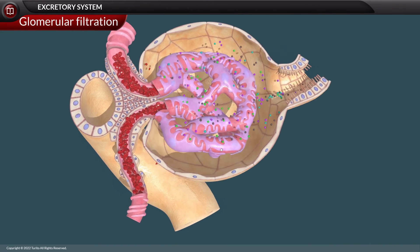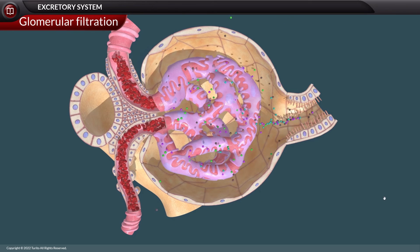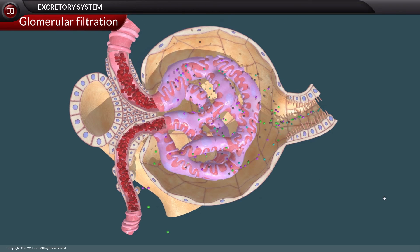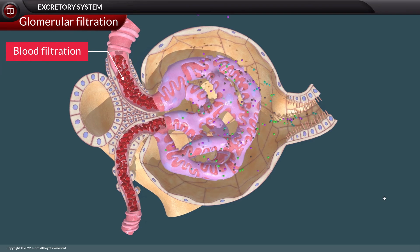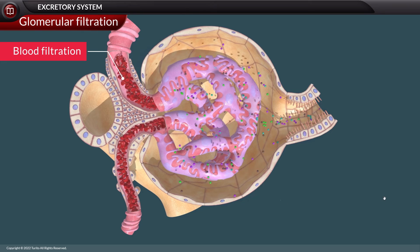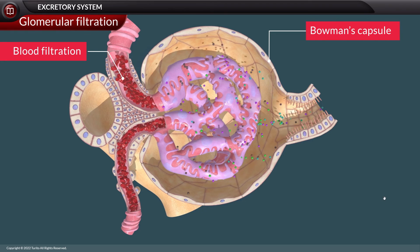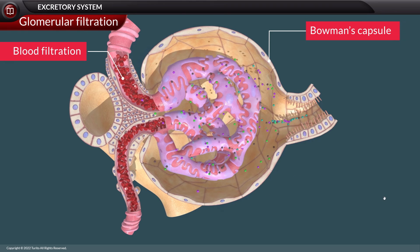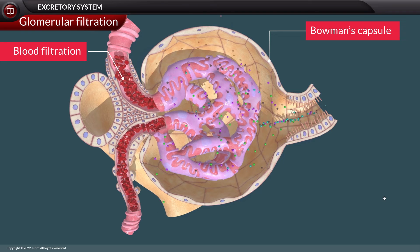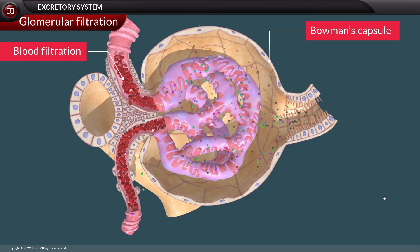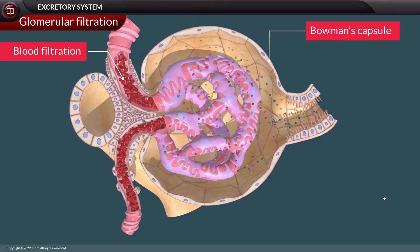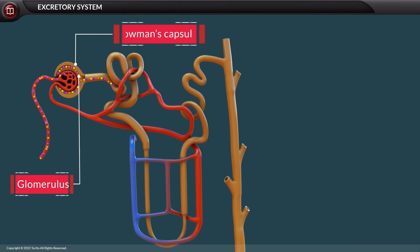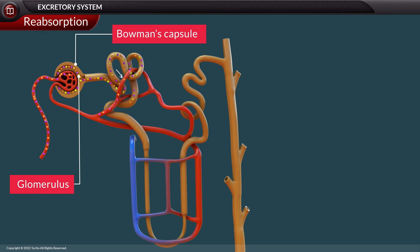The first step is glomerular filtration. Each nephron has a glomerulus, which is the site of blood filtration. The glomerulus is a network of capillaries surrounded by a cup-like structure called the Bowman's capsule. As blood flows through the glomerulus, blood pressure pushes water and solutes from the capillaries into the capsule through a filtration membrane, beginning the urine formation process.